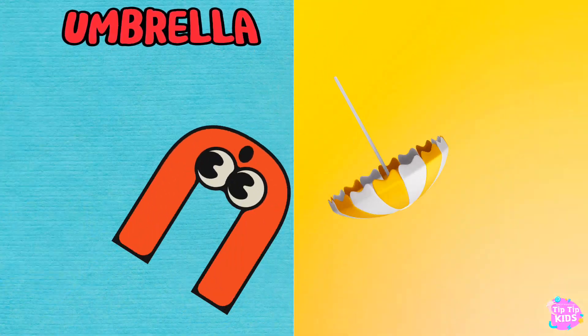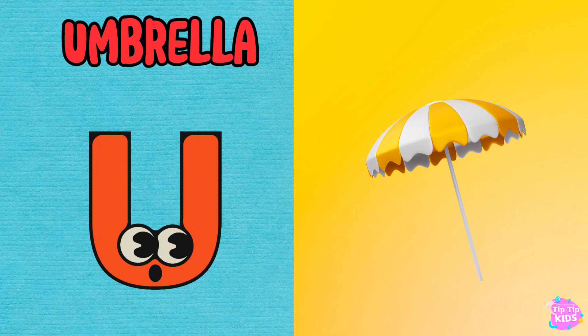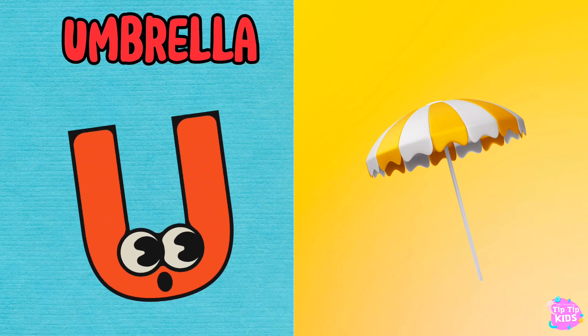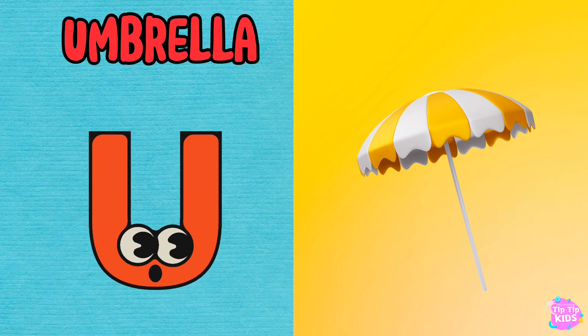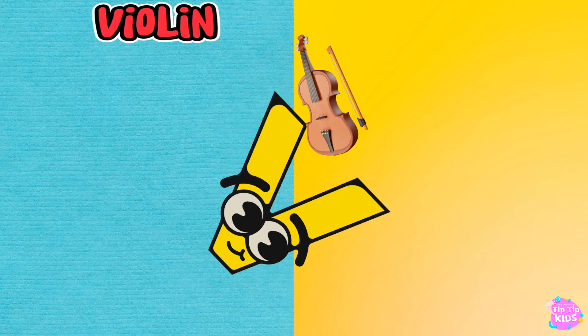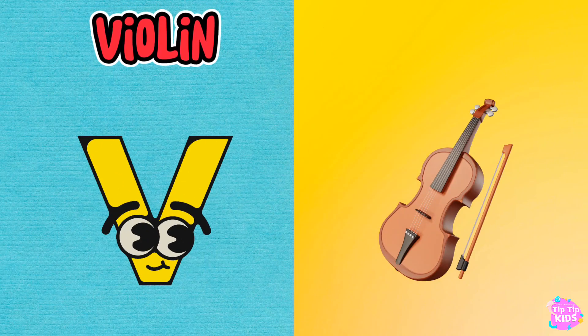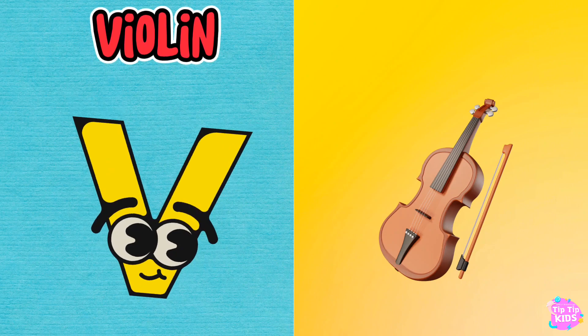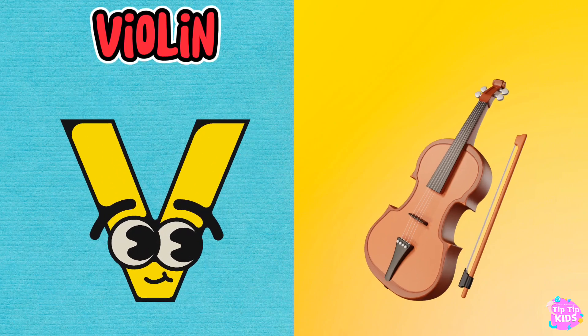U is for Umbrella, U-U-Umbrella. V is for Violin, V-V-Violin.